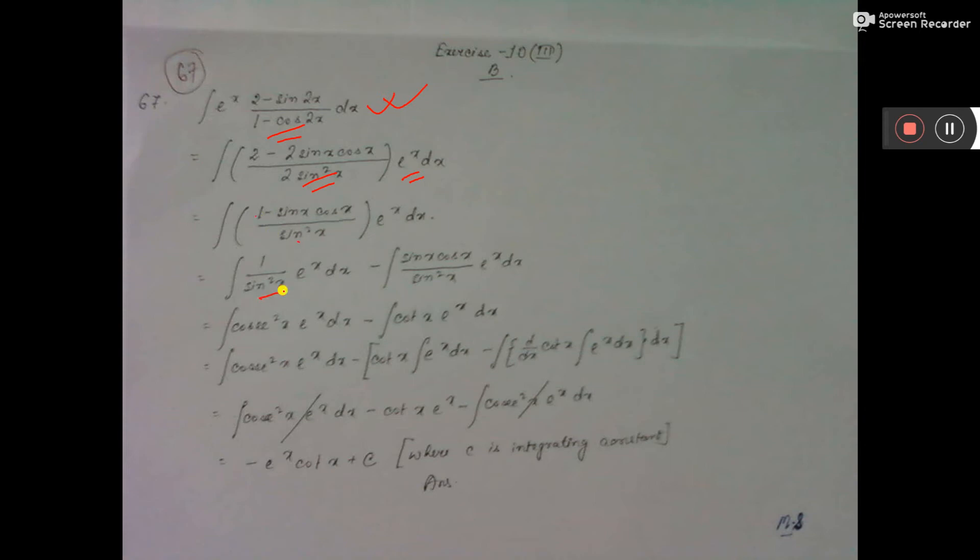Now, do 1 by this into this and then this by this into this. So here it is cos x square e to the power x, and here sin will—1 will cut cos by sin, that is cot x e to the power x.